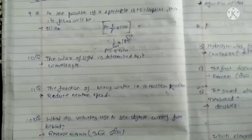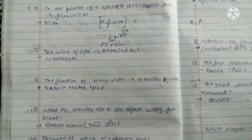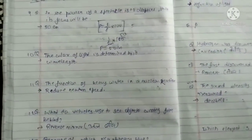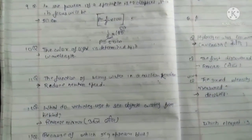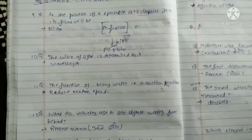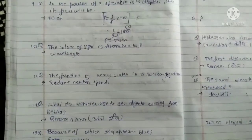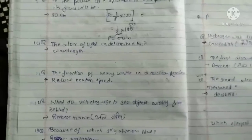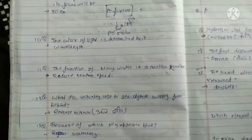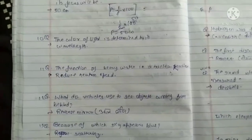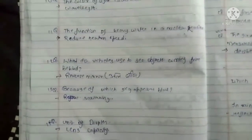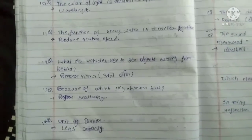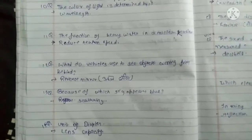What do vehicles use to see objects coming from behind? Convex mirror. The unit of diopter is lens capacity.